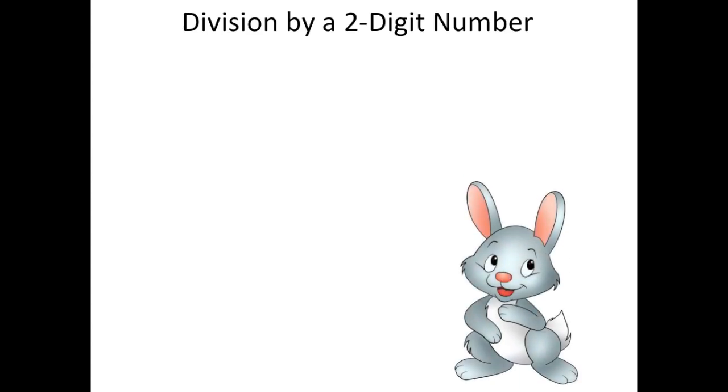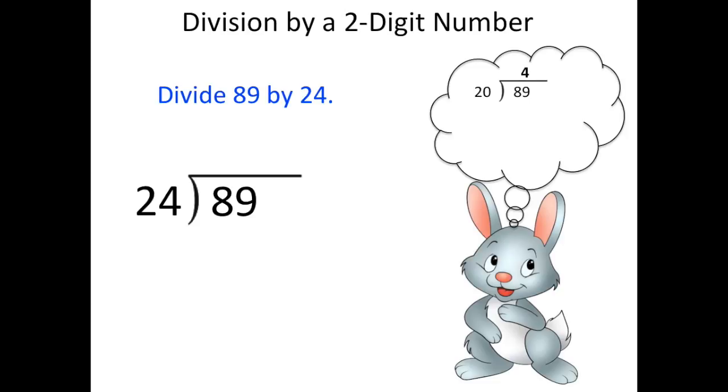Mr. Bunny has been asked to solve the following problem: Divide 89 by 24. He first starts by writing the problem as long division, and then he thinks to himself, 24 would be rounded to 20. So how many times can 20 go into 89?